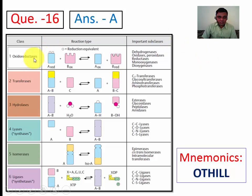So first one is oxidoreductase. Any enzyme which leads to oxidation and reduction, like dehydrogenase, oxidase, peroxidase, reductase, monoxygenase, and dioxidase. These all are the subclasses of oxidoreductase enzyme.